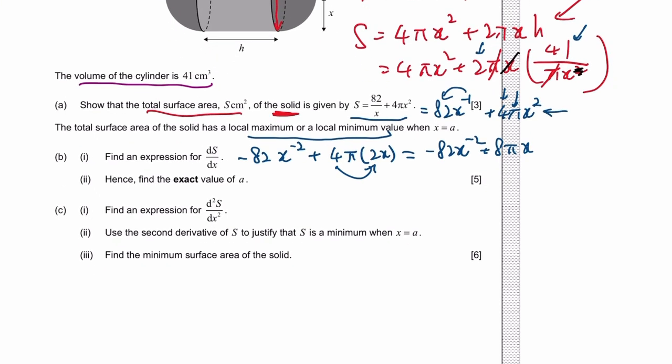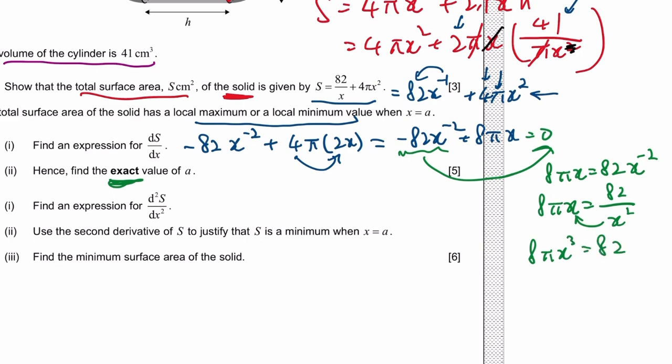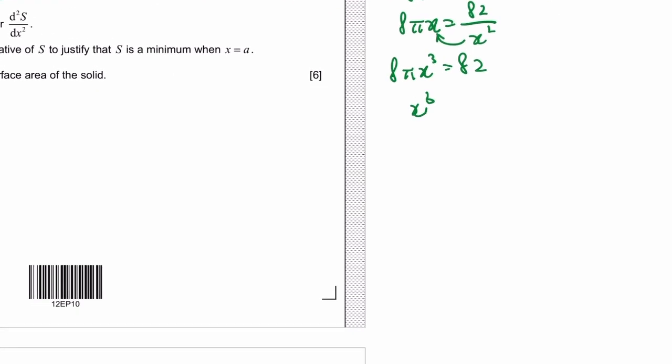To find the maximum or minimum, make the derivative equal to 0 and solve for x. You cannot use a calculator even though it's paper 2 because they want the exact value. Add to the other side, so we have 8 pi x equals 82 x to the power of negative 2. x to the power of negative 2 is over x squared. Then multiply, so it's x to the power of 3. x to the power of 3 is 82 over 8 pi, simplify by 2. So x is the cube root of 41 over 4 pi.